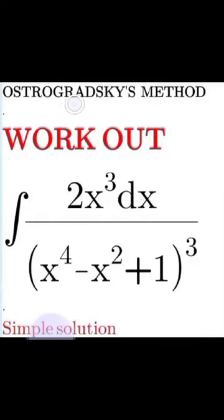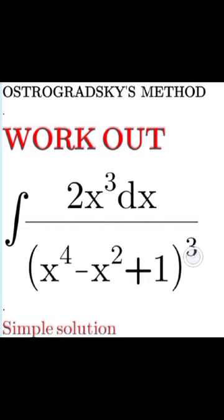The Ostrogradski method gives a simple solution to problems of this form. When you look at the problem, it has a repeated denominator — meaning the denominator is raised to a power, so its brackets are written three times. The degree of the numerator is less than the degree of the denominator. Ostrogradski's method says: whenever the degree of the denominator is greater than the numerator and the denominator is a repeated function, you use his method.